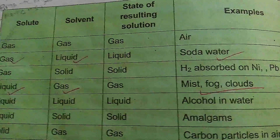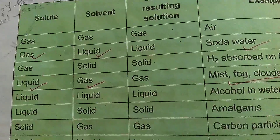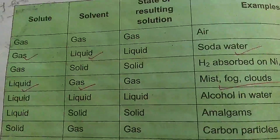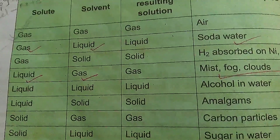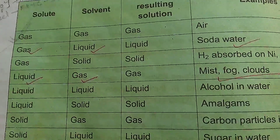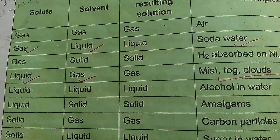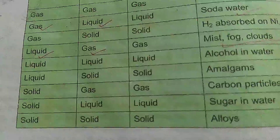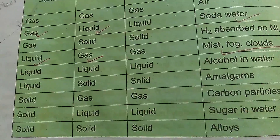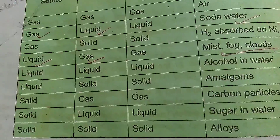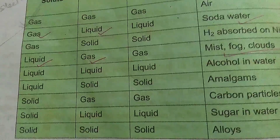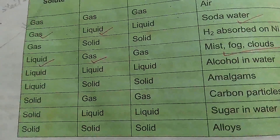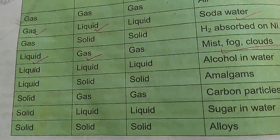Gas into liquid — so solvent is liquid, so solution is liquid in form. Gas into solid — so solvent is solid, then the solid solution will be in that form. You can see this table and observe how many types of solutions are made from gas, liquid, and solid — the three states of matter.